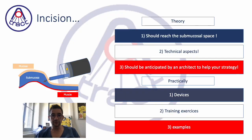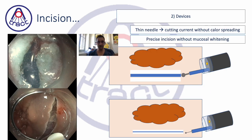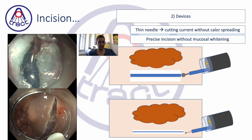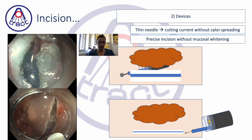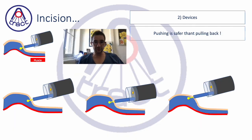Next, we discuss devices. There are two important points for the incision. If you have a very thin needle, you will have a thin incision and less cutting current is converted into heat spreading and coagulation current. With a large knife, you can have a large spread in size with very large mucosal whitening. If you use a small, thin needle, the cutting current is all converted to cutting, not to heat, and therefore there is very little whitening at the edges of the incision. So here you see a large incision with more coagulation, and here a thin incision with less coagulation — two different kinds of devices.